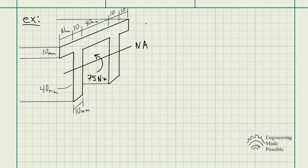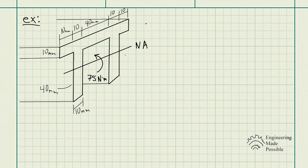Let's do an example. An aluminum machine part is subjected to a moment of 75 newton-meters. Determine the maximum tensile and compressive bending stresses in the part. The dimensions are given in millimeters. The cross section is a bit more complicated and will require additional calculations. The neutral axis is already drawn on the diagram.